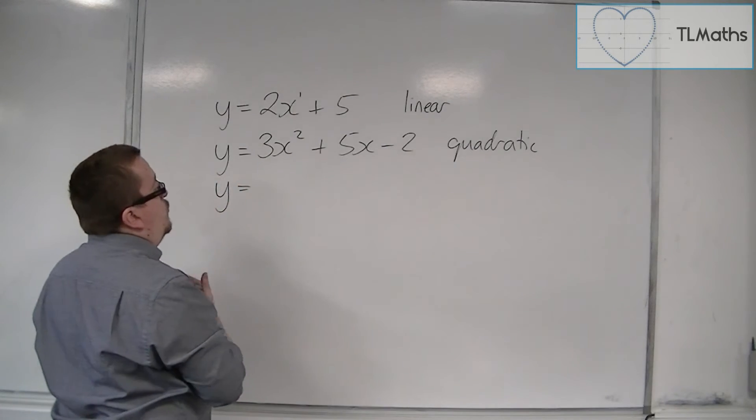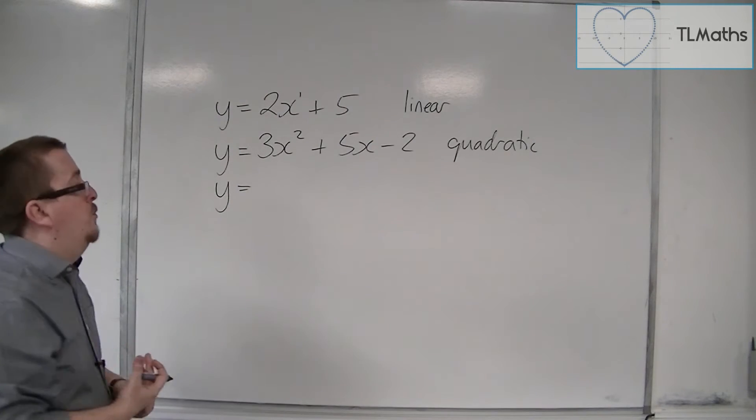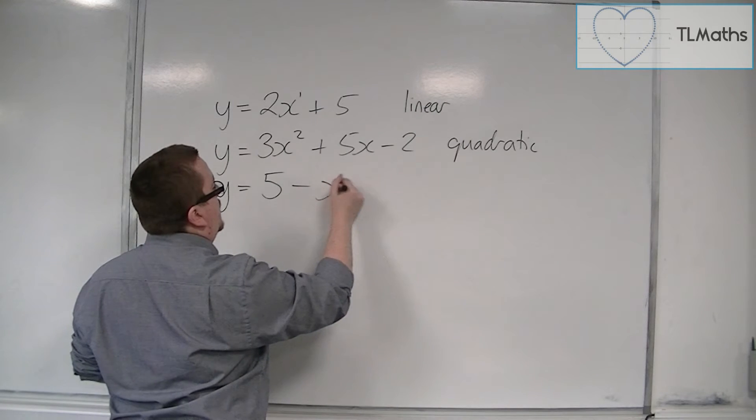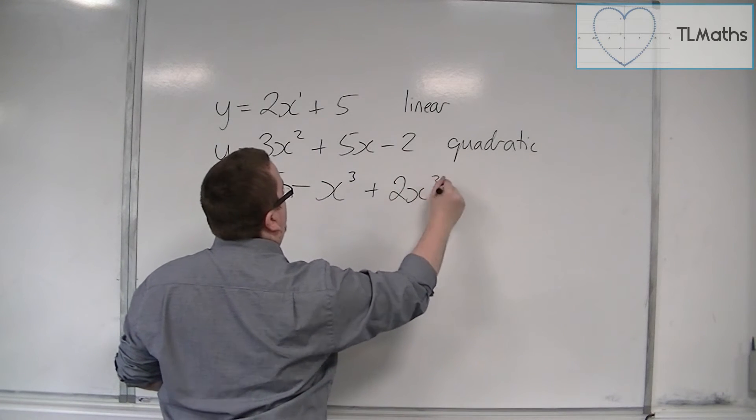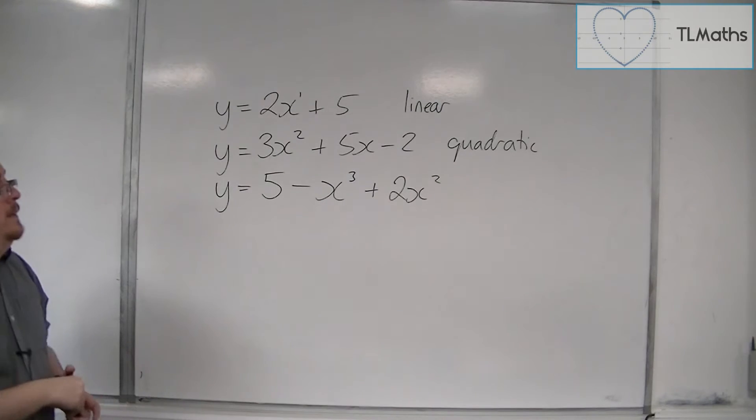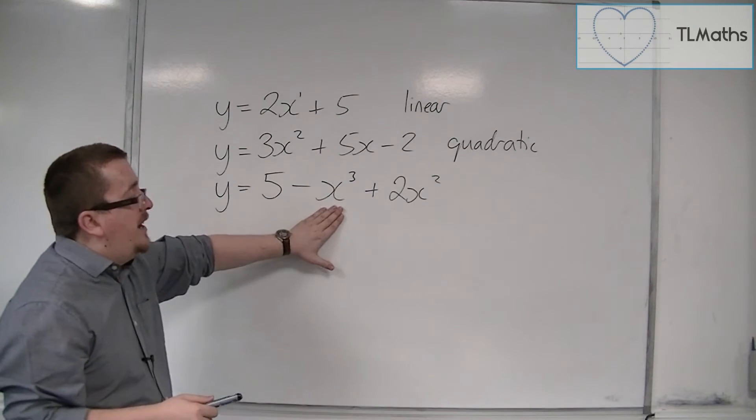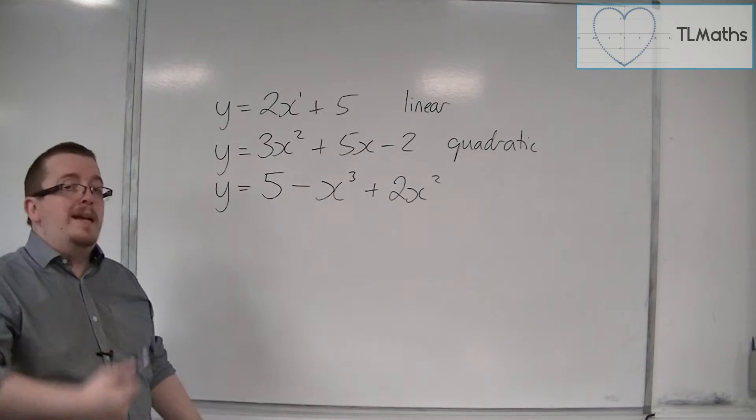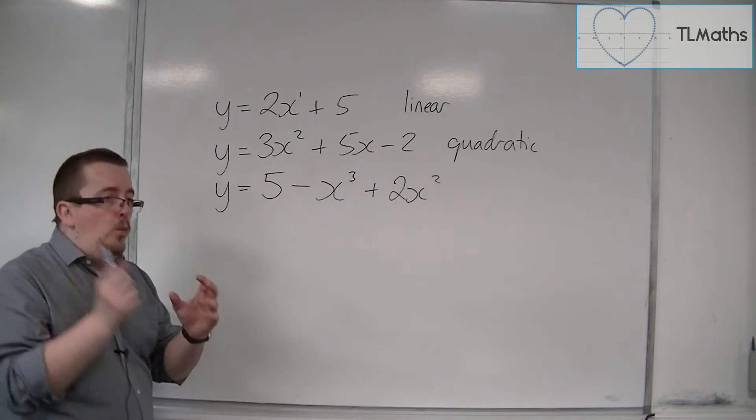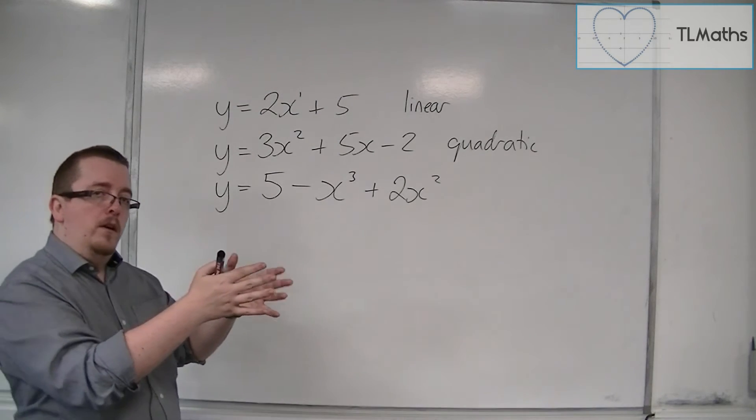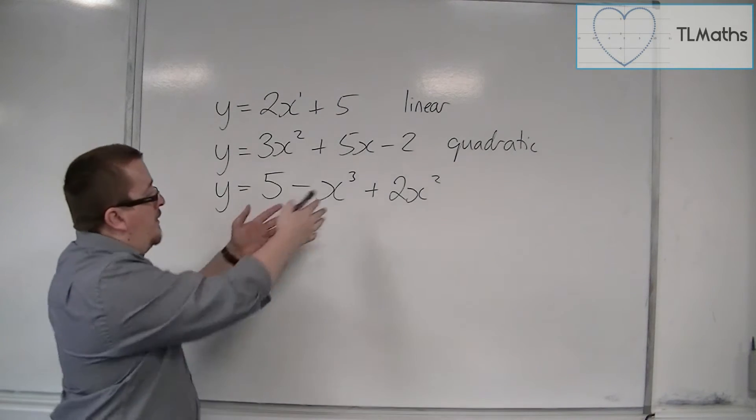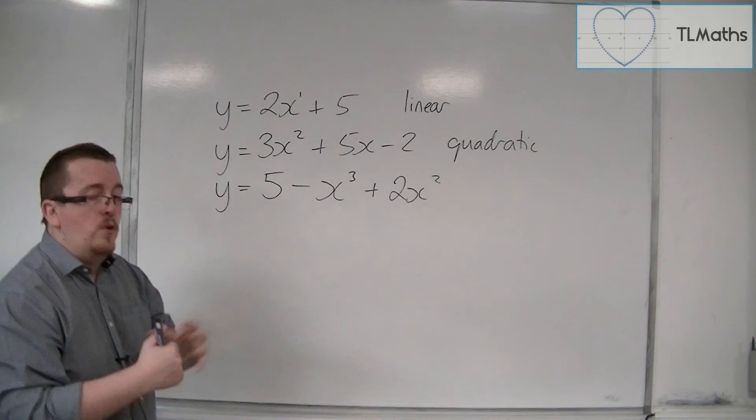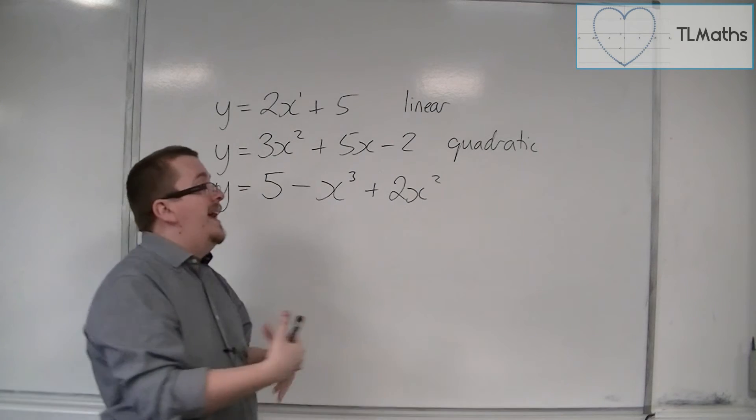We don't necessarily have to write it in this specific order. We might have y equals 5 take away x cubed plus 2x squared, for example. Now, as you can see, there's an x cubed in there. There's also an x squared, but the fact that there's an x squared doesn't make it a quadratic. You're always looking for the highest power of x that you can see. And that would be 3, and that would make it a cubic.